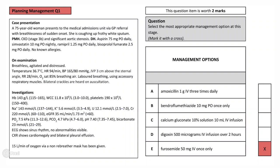Her potassium is only slightly raised and is not of huge concern at the moment. The chest X-ray finding of cardiomegaly and pleural effusion further confirms the diagnosis of pulmonary oedema. The correct answer in this case is furosemide, as this patient needs diuretics to treat her pulmonary oedema and improve her symptoms.